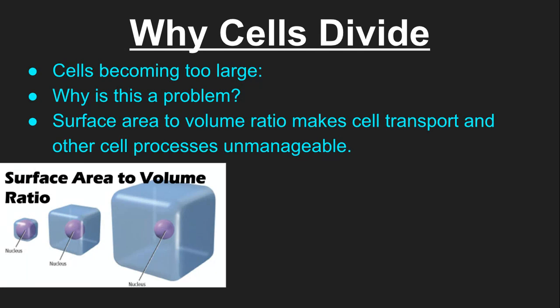As you know, the cell processes are all regulated by the nucleus. So if the cell keeps getting bigger, the nucleus has more and more to regulate. The problem with the cell is that the surface area and the volume increase at different rates.